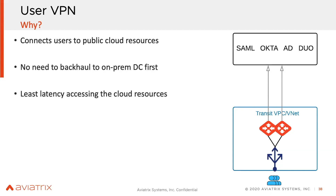When you talk to legacy user VPN providers, what they do is basically bring you to on-prem, and then from on-prem you connect to cloud — so you're taking some extra hops in between. The solution that we have does not need anything on-prem. You just need to deploy these AVTICS gateways in the cloud, and then you can bring your users directly into the cloud, or go towards on-prem from there.